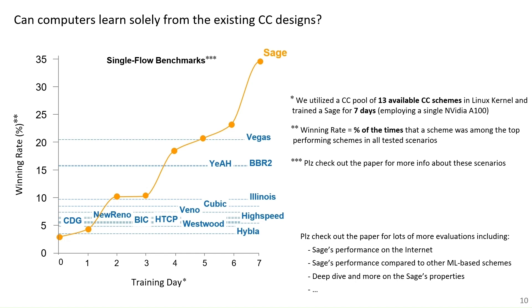By the way, these are the benchmarks that we have and we have defined them in the paper. For more details, again, please check out the paper. So the key here is the answer to the main question that we had. Can computers learn solely from the existing congestion control designs? Yes, indeed they can. And SAGE is a sample showing this fact.